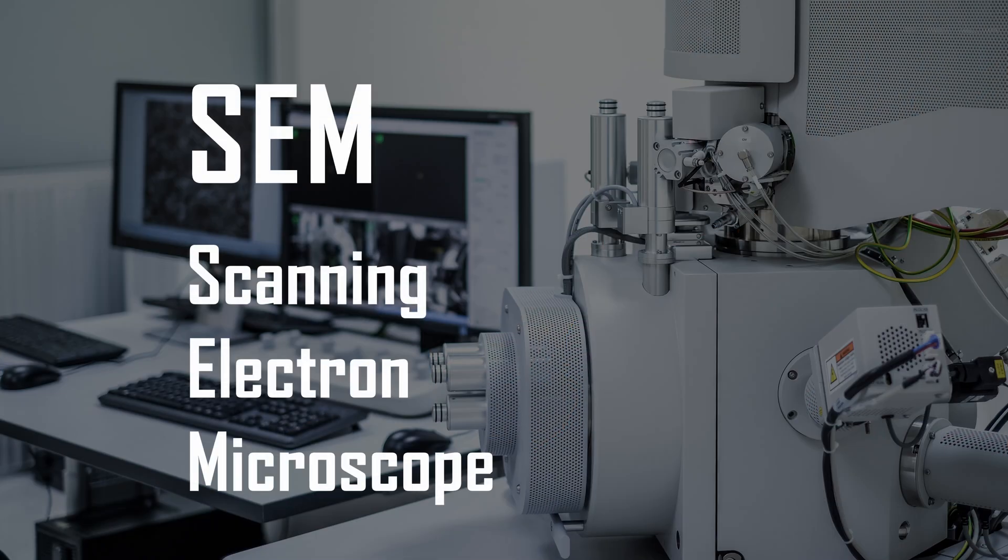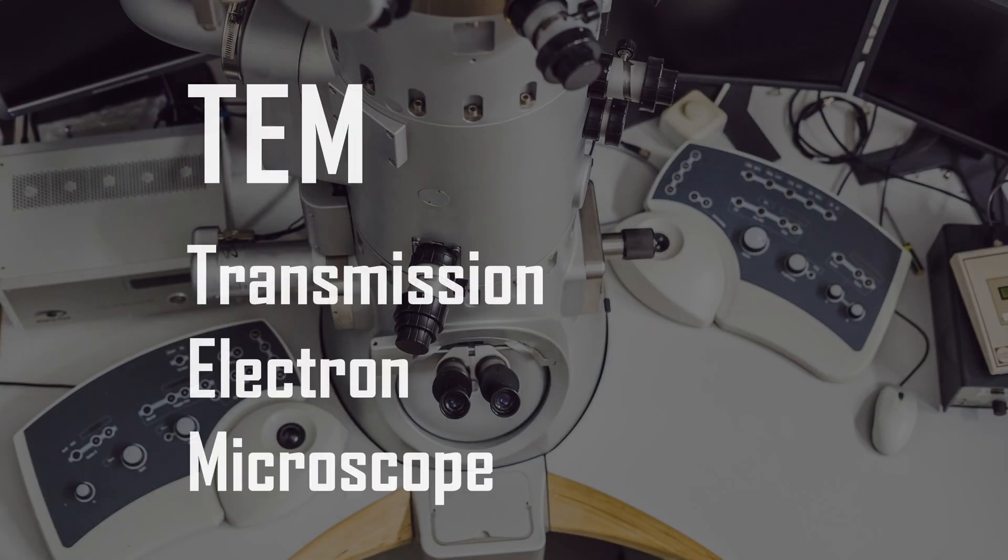Electron microscopy is commonly employed to image samples in nanotechnology labs. There are two major categories of electron microscopy: scanning electron microscopy, or SEM, and transmission electron microscopy, or TEM.